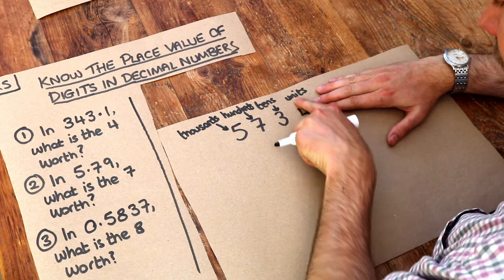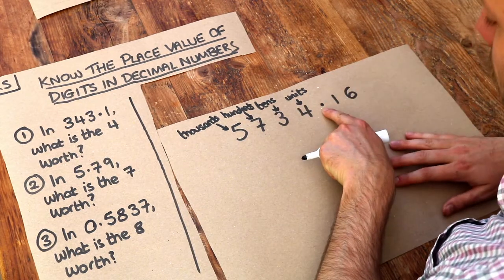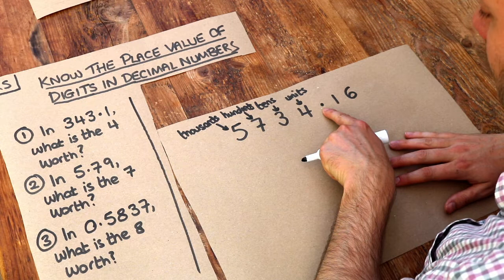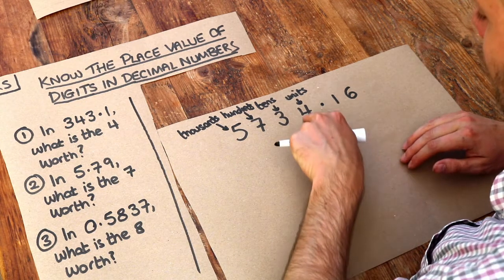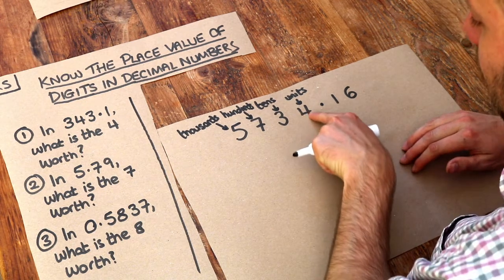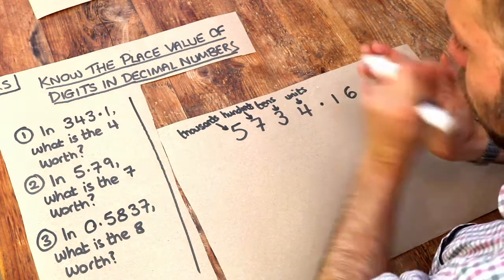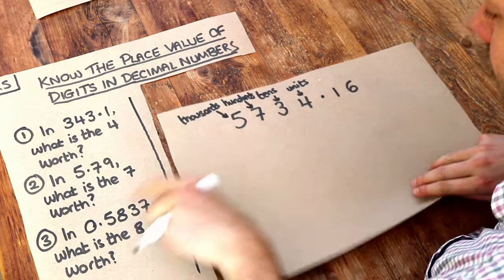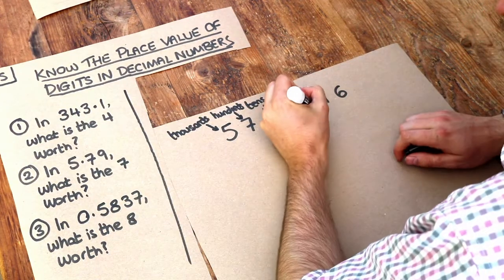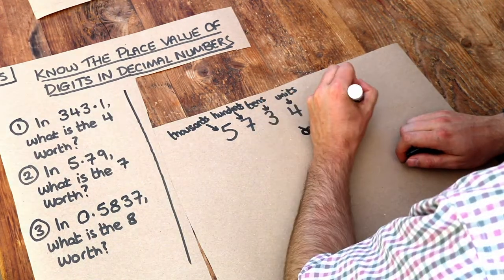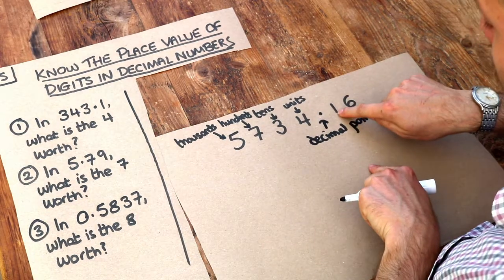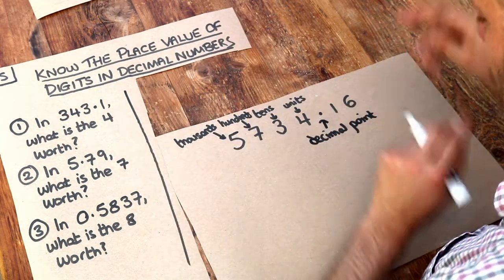On the right of the units digit we have something called the decimal point. That basically allows us to divide a whole—because remember, this represents four wholes. We can actually divide a whole into smaller parts. This is known as a decimal point, and after this is when we've divided that whole into smaller parts.